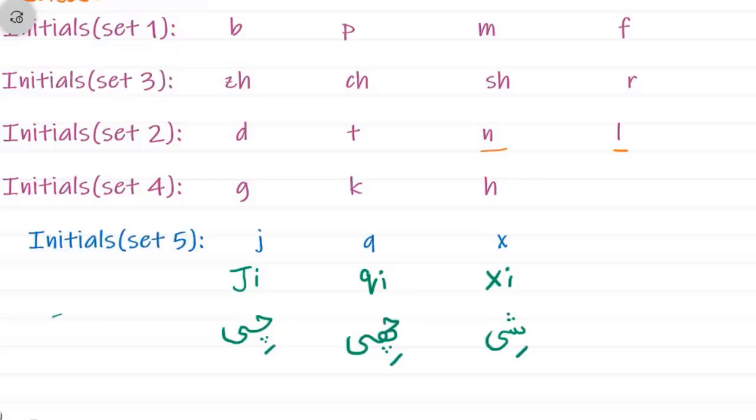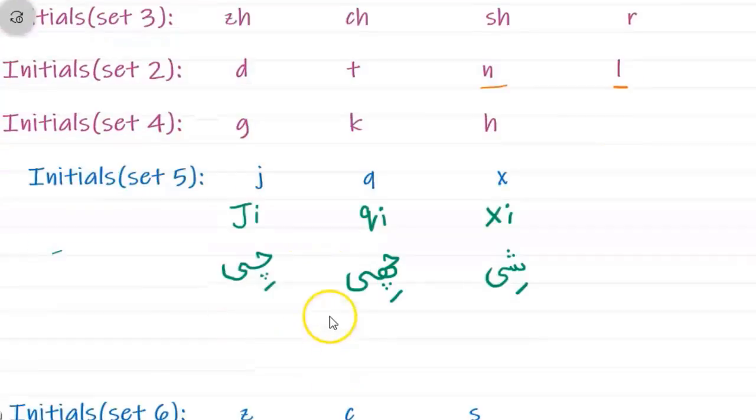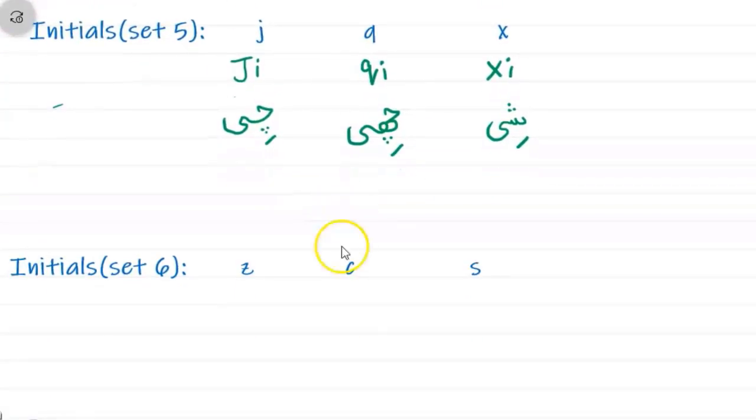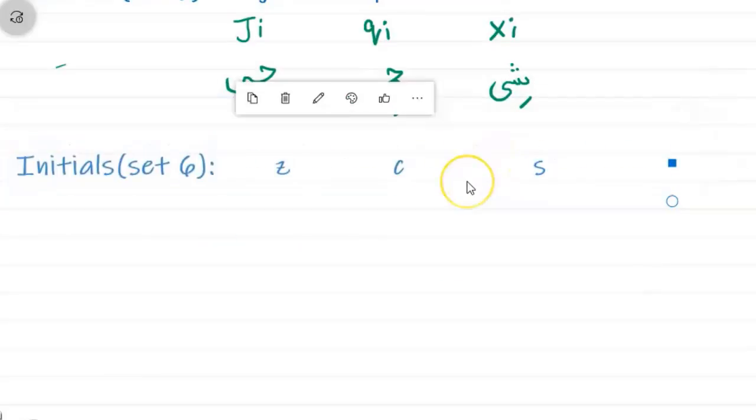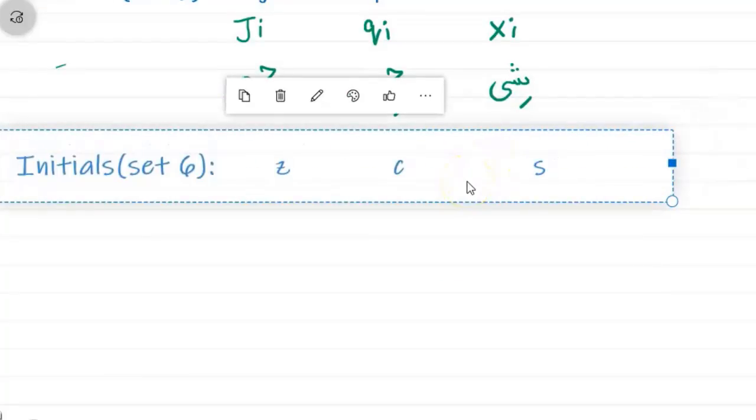The last initial set, which is quite difficult in Chinese language for pronunciation, is set six. This set is quite difficult for foreigners who can speak English because these are not similar words in English, so you might find it difficult.